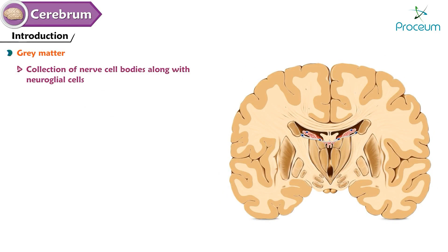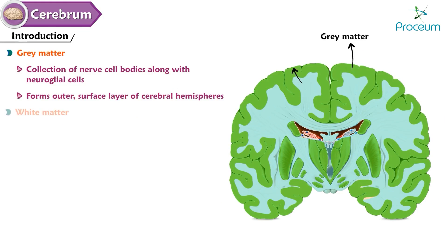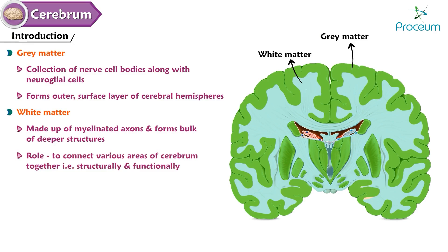A collection of nerve cell bodies along with neuroglial cells is known as gray matter, which forms the outer surface layer of the cerebral hemispheres. White matter is made up of myelinated axons and forms the bulk of the deeper structures of the cerebrum. Its role is to connect various areas of the cerebrum together, both structurally and functionally.